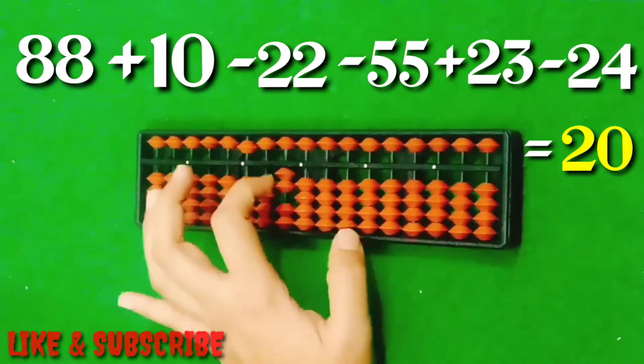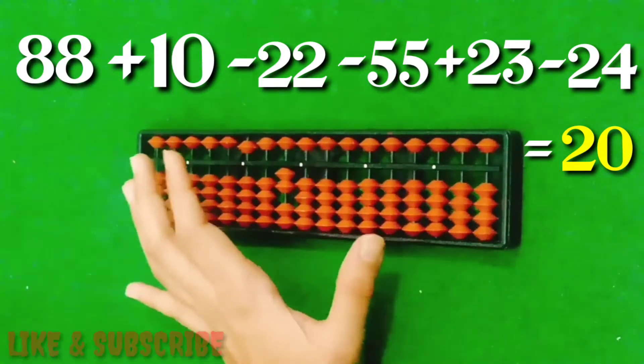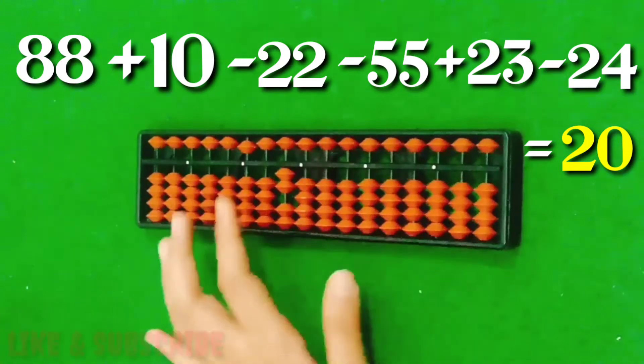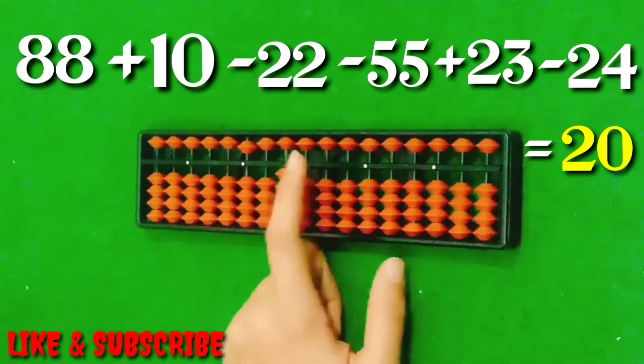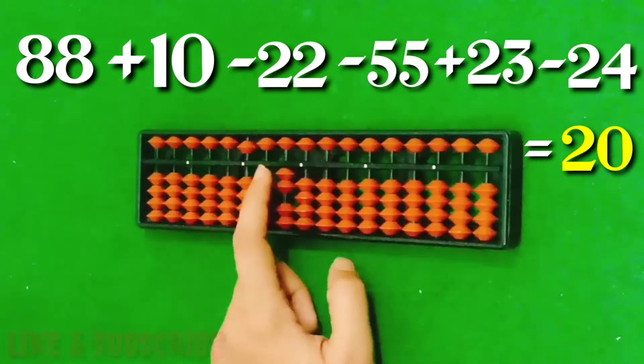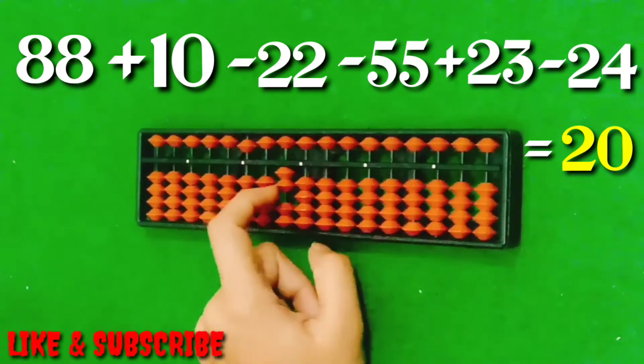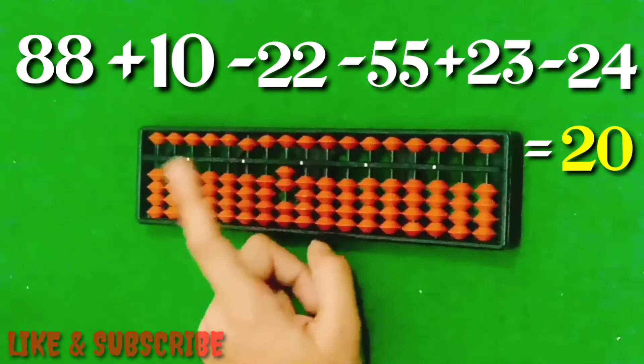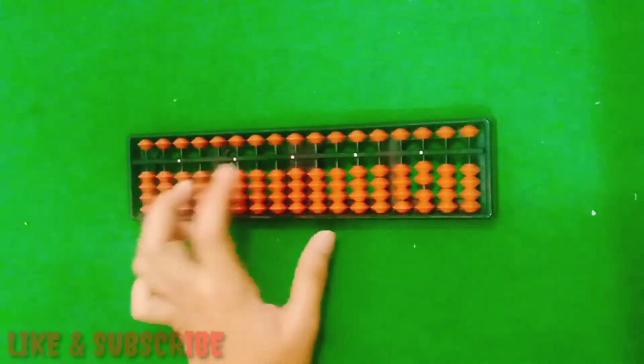Otherwise, whenever bits do not touch this value bar, then it makes 0. It makes 0 value because it does not touch the value bar. And these two bits are touching the value bar, so it makes a number and it makes a value. So this is 20 to 0.